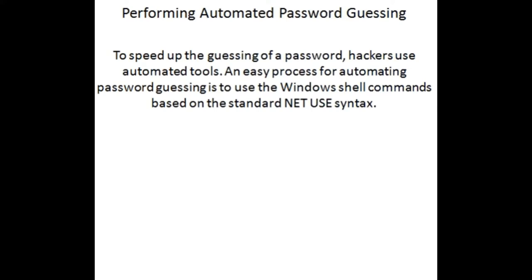To defend against password guessing, two options exist: smart cards and biometrics both add a layer of security to the insecurity inherent when users create their own passwords. A user can be authenticated and validated using biometrics, which use physical characteristics such as fingerprints, hand geometry scans, and retinal scans as credentials to validate users. Both smart cards and biometrics use two-factor authentication, requiring two forms of identification when validating a user — something the user physically has and something the user knows — making the authentication process much less susceptible to password attacks. Offline attacks are performed from a location other than the actual computer where the passwords reside.